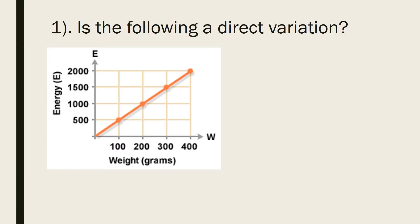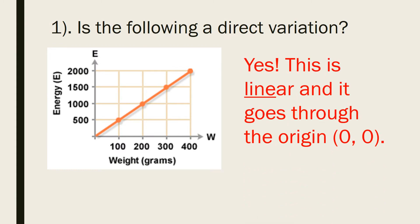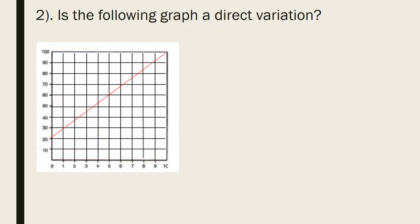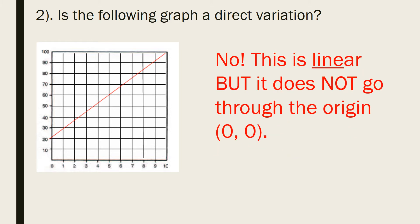Is the following graph a direct variation? Yes, this is linear and it goes through the origin 0,0. Is the following graph a direct variation? No, this is linear, but it does not go through the origin 0,0.